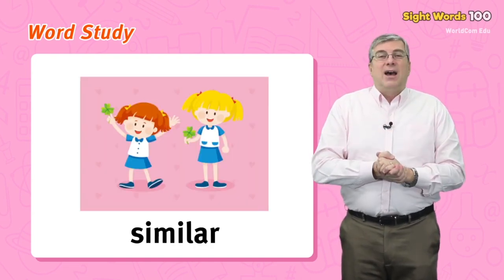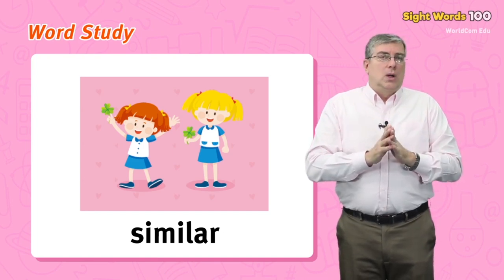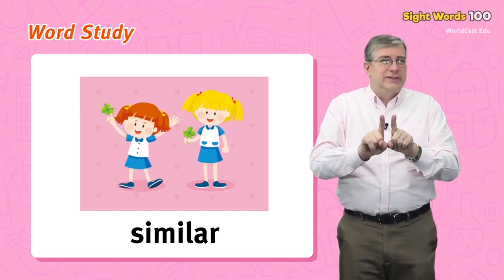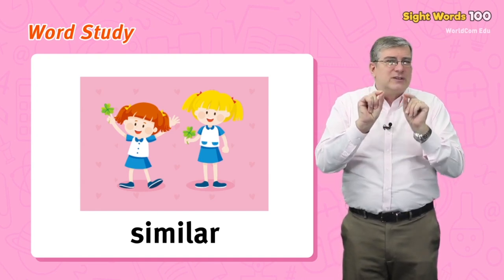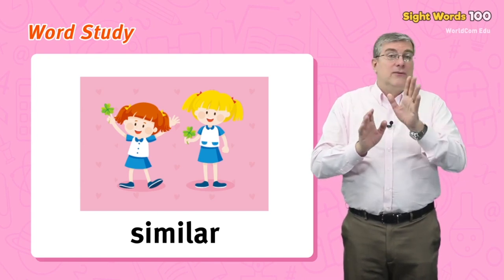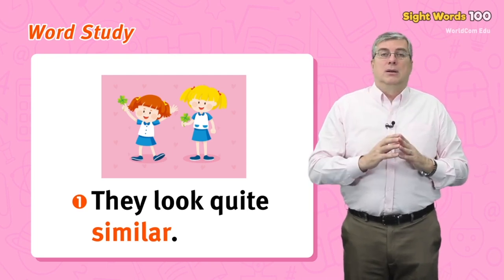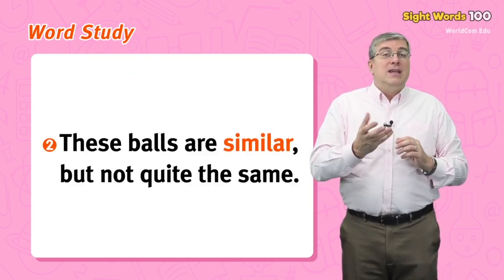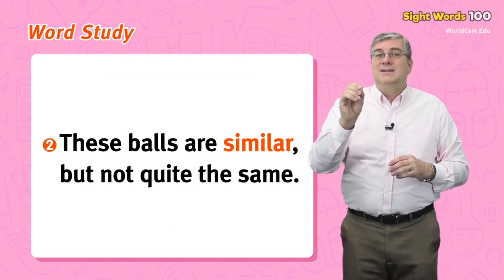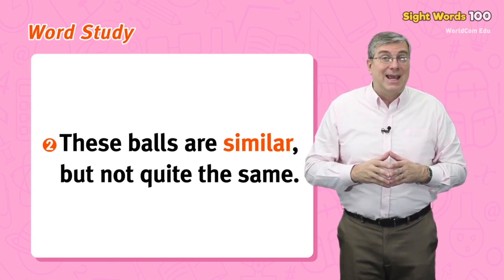Finally we have similar. We use this word to say that two things are almost the same but there are just a few differences — not exactly the same. For example, they look quite similar, or these balls are similar but not quite the same. Those are our words for today.